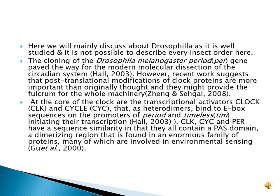CLK, CYC and PER have sequence similarity in that they all contain a PAS domain, a dimerizing region that is found in an enormous family of proteins, many of which are involved in environmental sensing.